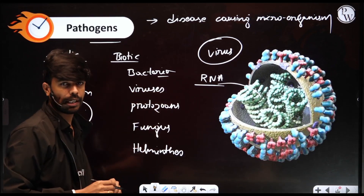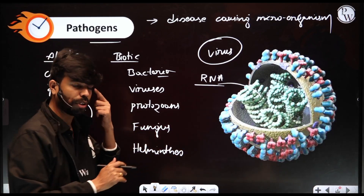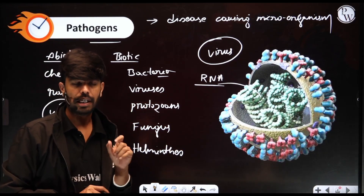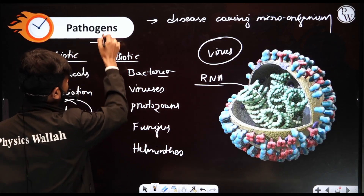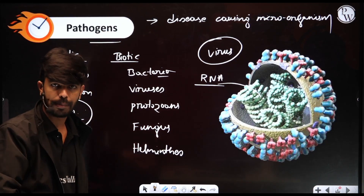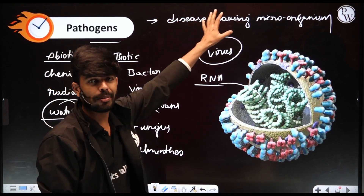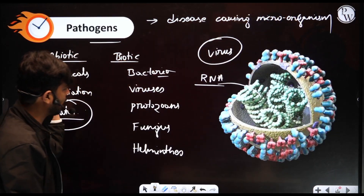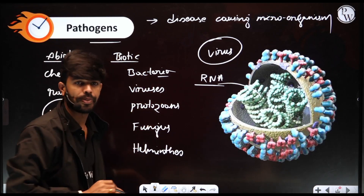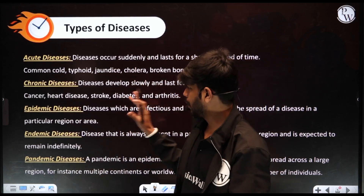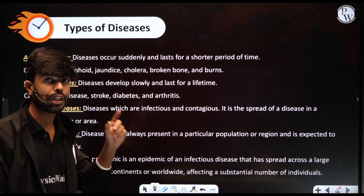For example, Clostridium tetani causes tetanus, and Streptococcus pneumoniae causes pneumonia — those are dangerous. But Lactobacillus, which is a lactic acid bacteria, helps convert milk into curd and enriches curd with Vitamin B12 — that is beneficial. Based on pathogens, we can classify diseases into different types. Now let us look at the types of diseases — their definitions and examples.